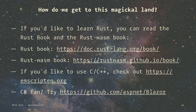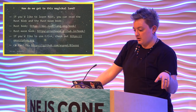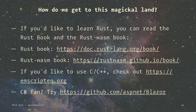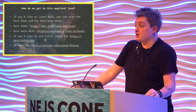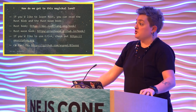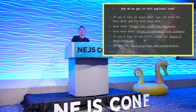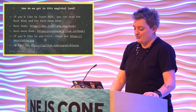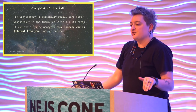How do we get to this magical land of WebAssembly? If you'd like to learn Rust — and I highly recommend it — read the Rust WASM book and the Rust book, both written by core team members of Rust. If you'd like to use C and C++, check out Emscripten — that's what was used to compile the ImageMagick library I used today. And if you're a fan of C# or Microsoft technologies, C# has a WebAssembly target called Blazor, and it's open source — that's pretty rad.